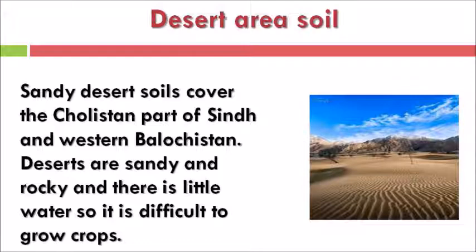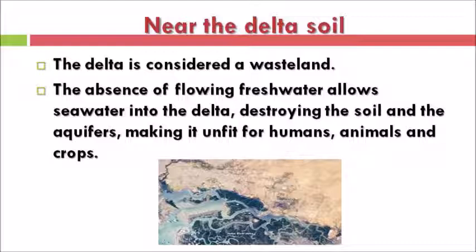Near the delta, the soil is considered a waste area. The absence of flowing fresh water allows sea water into the delta, destroying the soil and the aquifer, making it unfit for humans, animals, and crops.